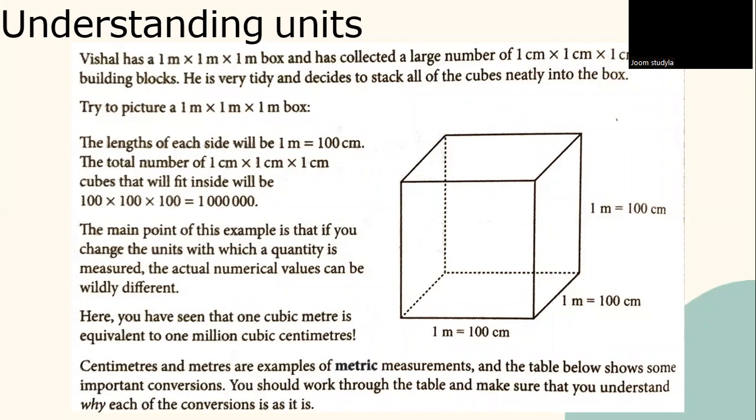Understanding units. Vishal has a 1 meter by 1 meter by 1 meter box and has collected a large number of 1 cm by 1 cm by 1 cm building blocks. He is very tidy and decides to stack all of the cubes neatly into the box. Try to picture a 1 meter by 1 meter by 1 meter box. The length of each side will be 1 meter which is equivalent to 100 cm. The total number of 1 cm by 1 cm by 1 cm cubes that will fit inside will be 100 by 100 by 100, equivalent to 1 million.